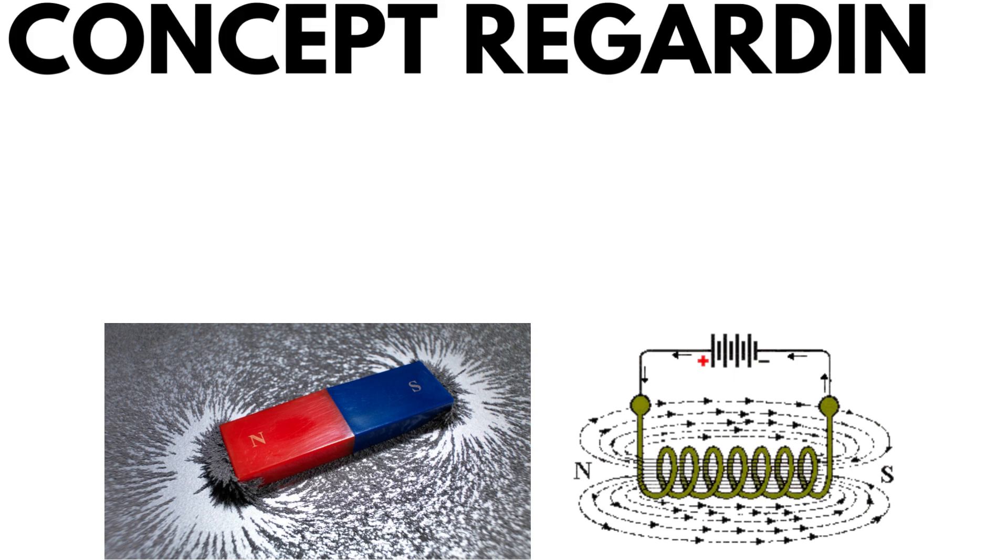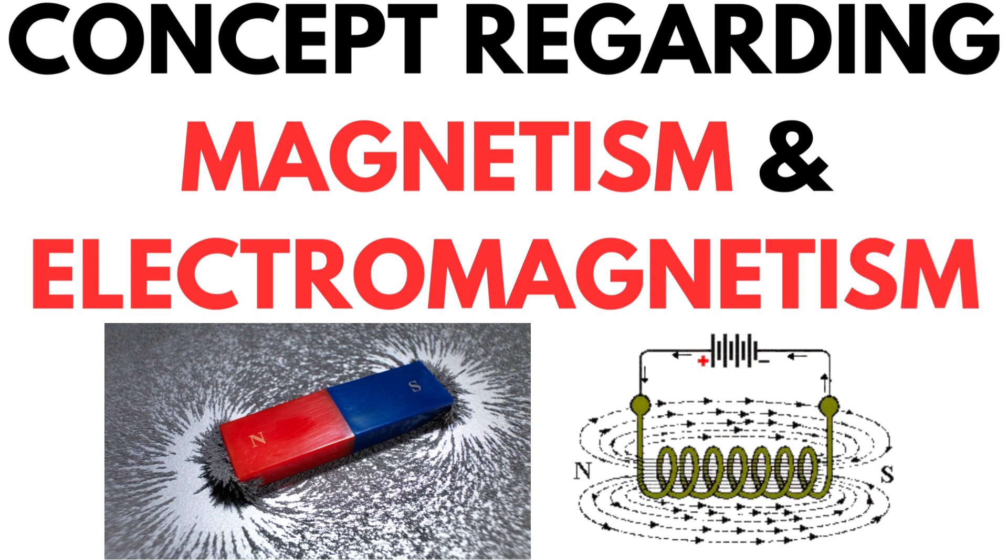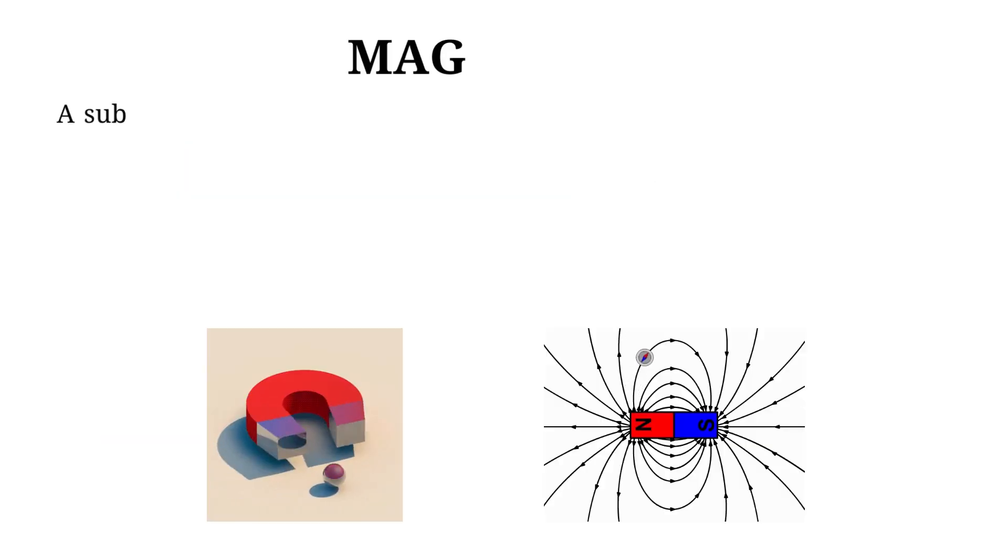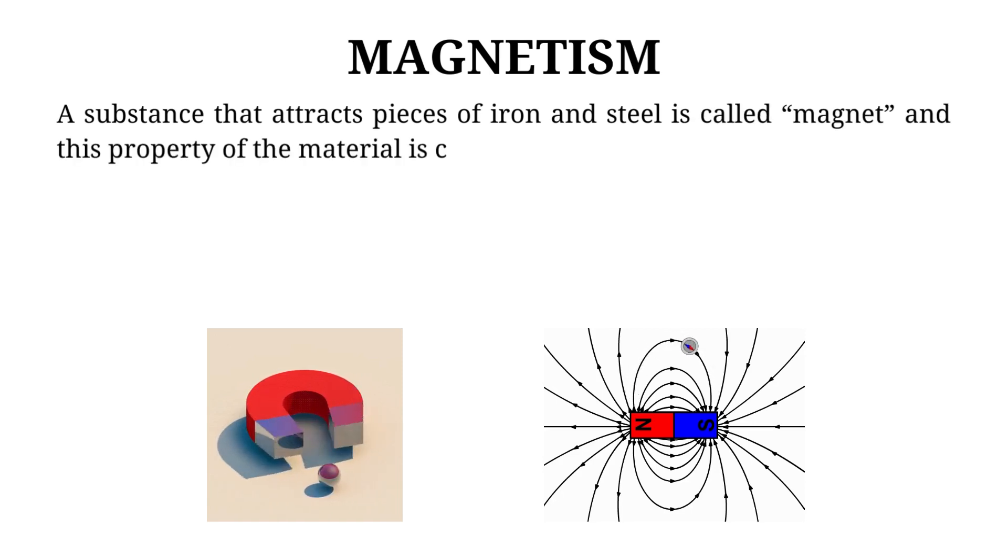This video presents an educational exploration of the concepts related to magnetism and electromagnetism. A substance that attracts pieces of iron and steel is called magnet and this property of the material is called magnetism.